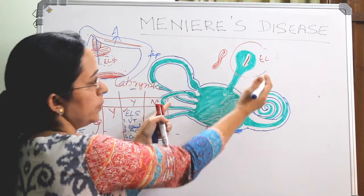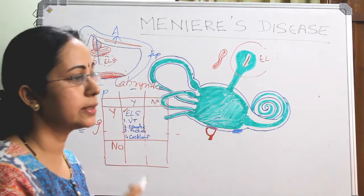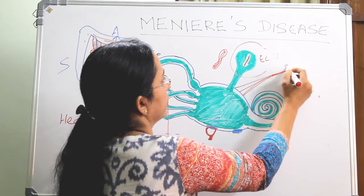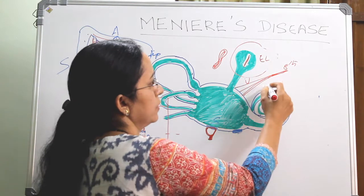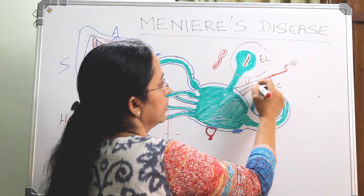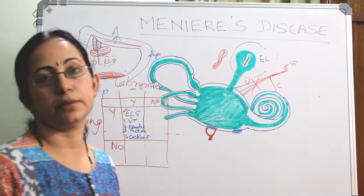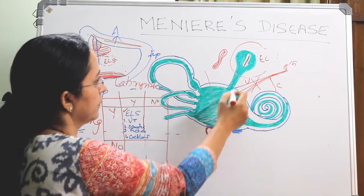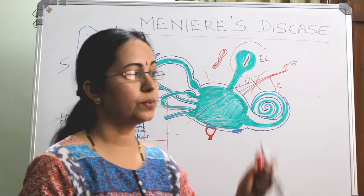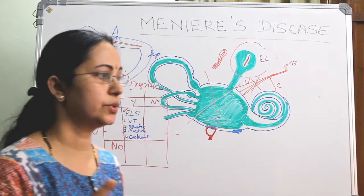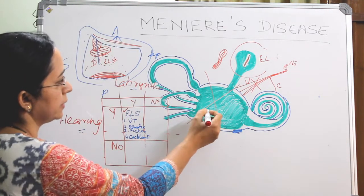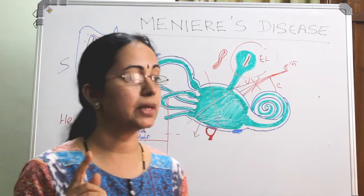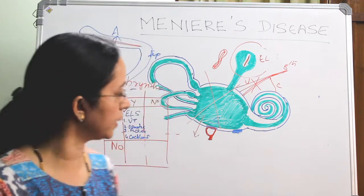One, we can ablate the vestibular end organ. Or there is the vestibular component of the eighth nerve — the cochlear component stays intact. Only the vestibular component can be destroyed. So there are two procedures: ablate the vestibular end organ, or ablate the vestibular component of the eighth nerve. To ablate the vestibular end organ, one method is chemical ablation and another is non-chemical ablation.